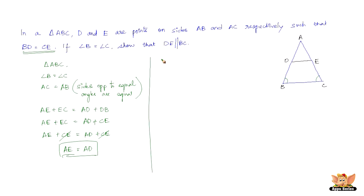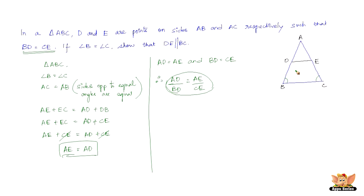Since AE equals AD and BD equals CE, we can write AD by BD equals AE by CE. This establishes that DE divides the sides AB and AC of the triangle in equal ratios, that is AD by DB equals AE by EC. Therefore, by the converse of the basic proportionality theorem, DE is parallel to BC.